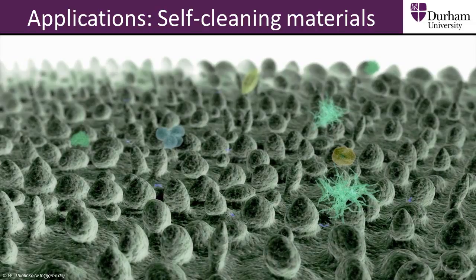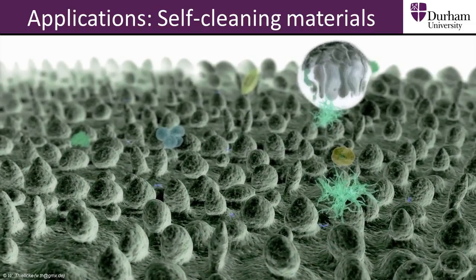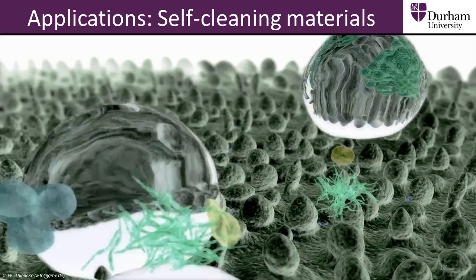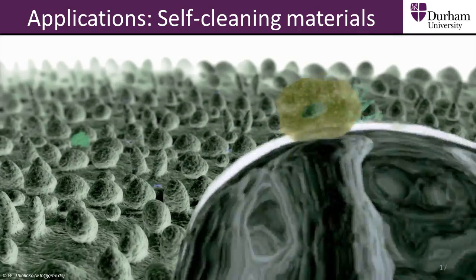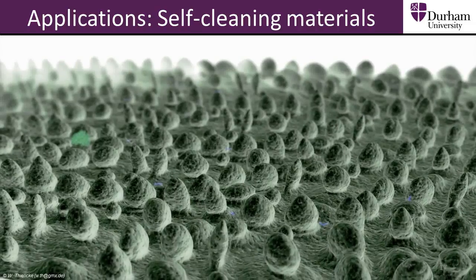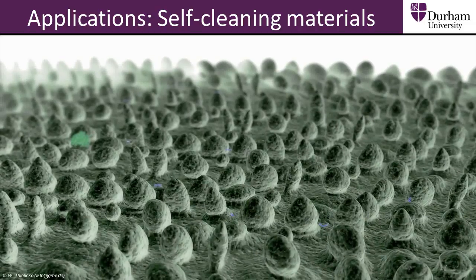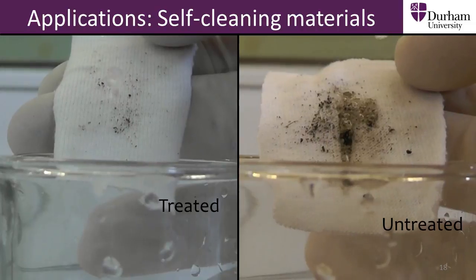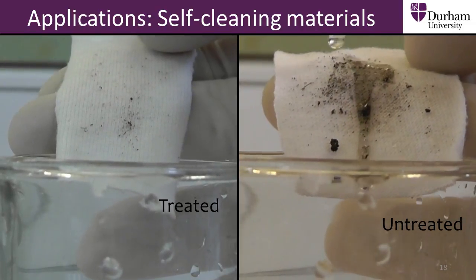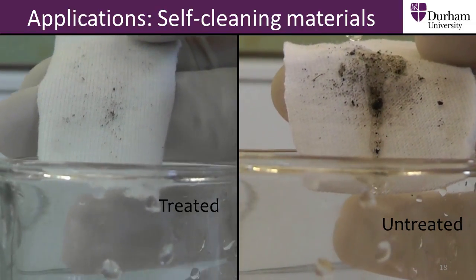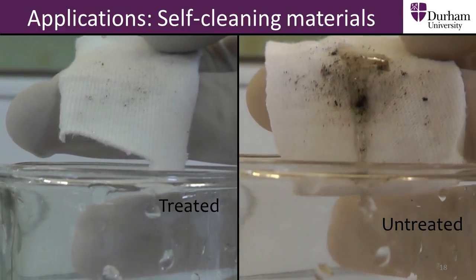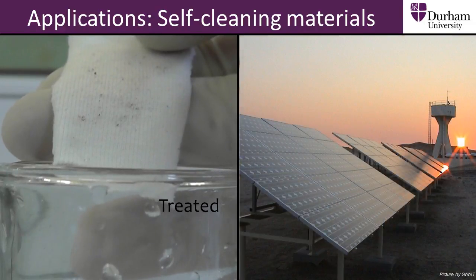Another use of superhydrophobic surfaces is for self-cleaning materials. On superhydrophobic surfaces, any small dirt particles sitting on the surface will be picked up by water rolling on the surface and be washed away. As well as the reduced maintenance necessary to keep everyday items clean — like worktops, windows, and clothing — self-cleaning can also be used to improve the performance and efficiency of high-tech products like solar cells.